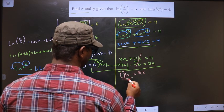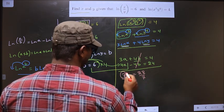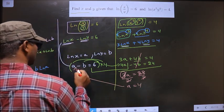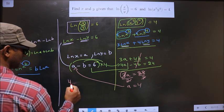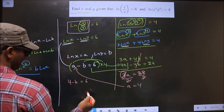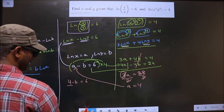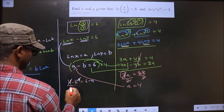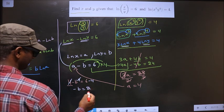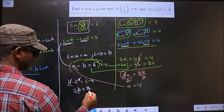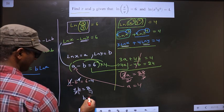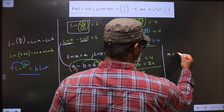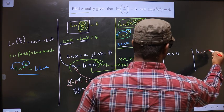To get a, divide both sides by 7. It cancels out and we get a = 4. Now substitute a = 4 into the first equation: 4 - b = 6. Subtract 4 from both sides: -b = 2. Divide by -1 on both sides: b = -2. So we have a = 4 and b = -2.